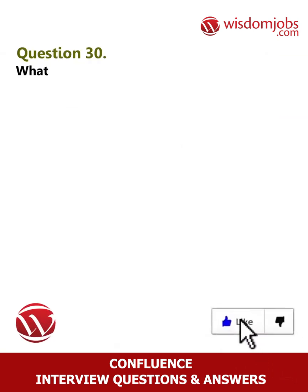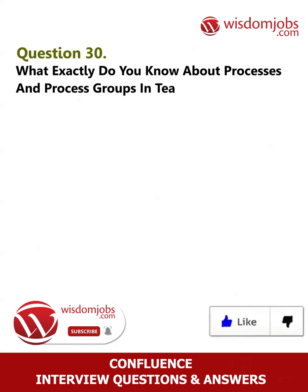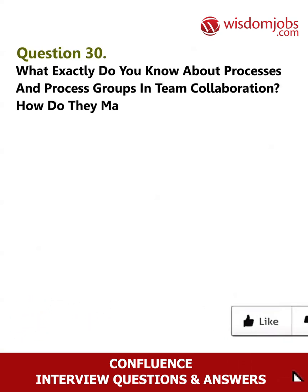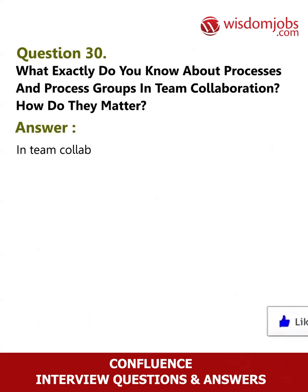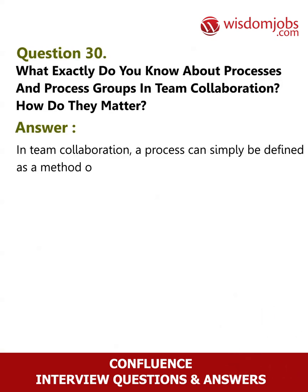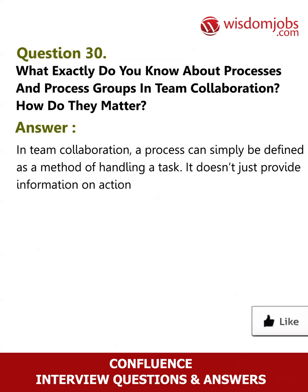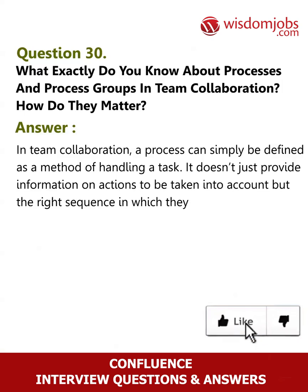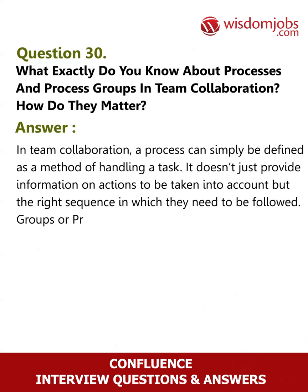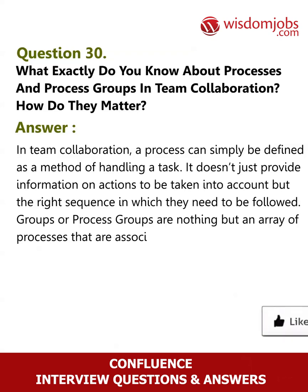Question 30: What exactly do you know about processes and process groups in team collaboration? How do they matter? Answer: In team collaboration, a process can simply be defined as a method of handling a task. It doesn't just provide information on actions to be taken into account but the right sequence in which they need to be followed. Process groups are nothing but an array of processes that are associated with other activities of a project.